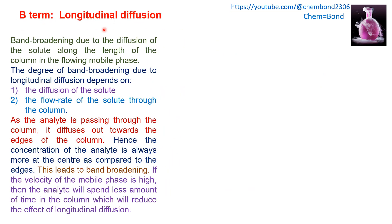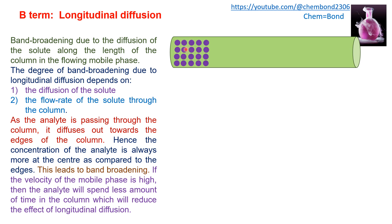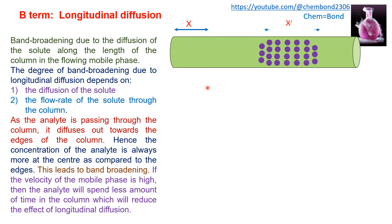The B term represents longitudinal diffusion — band broadening due to the diffusion of solute along the length of the column in a flowing mobile phase. If a band of solute particles has width X and elutes without diffusion, it would produce a band width of X. However, as solute moves through the column, diffusion occurs and the band width increases to X', where X' is greater than X. The degree of band broadening due to longitudinal diffusion depends on the diffusivity of the solute and the flow rate.